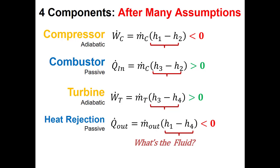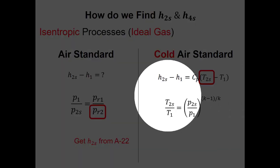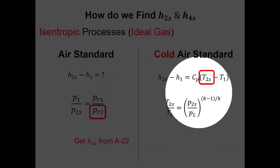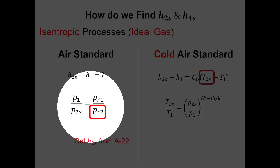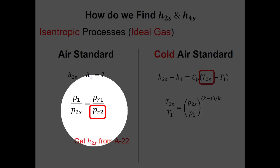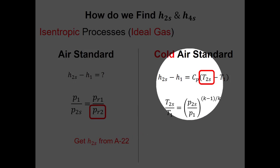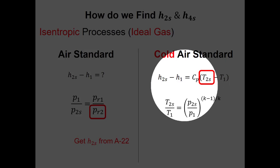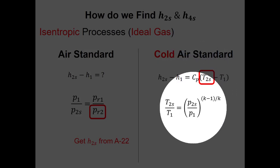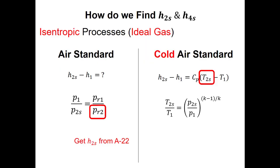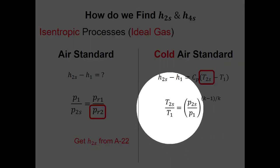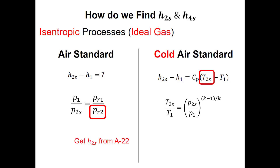That brings us to our third big question: what's the fluid? In a Brayton cycle the fluid is an ideal gas, so we decide whether to use a variable specific heat solution or to assume constant specific heat. For variable specific heat we find individual specific enthalpies, and for isentropic processes we use the ratio of pressures equal to the ratio of reduced pressures. For a cold air standard problem we model delta-h as c_p times delta-T, and for isentropic processes we use an equation with k in the exponent — specifically the relationship between the ratio of temperatures and the ratio of pressures.